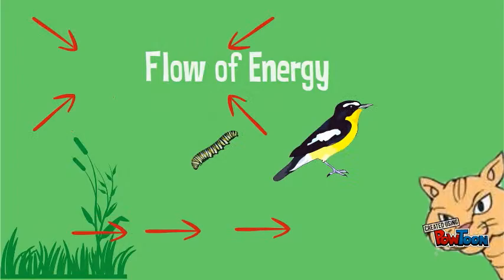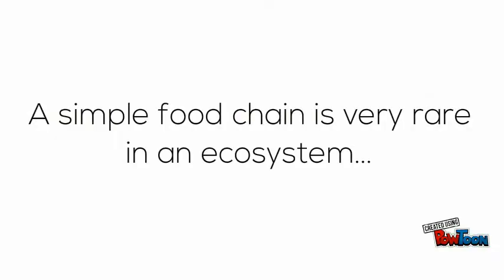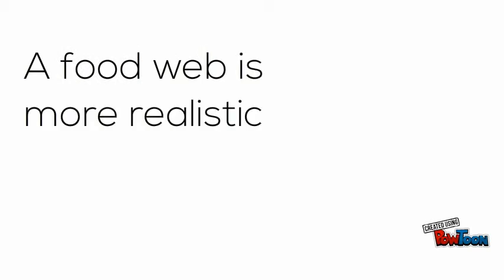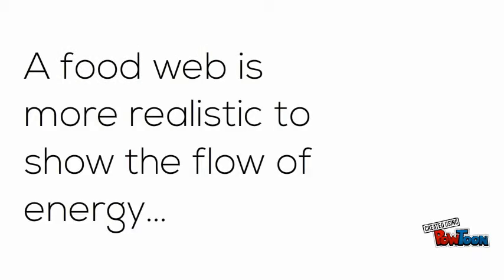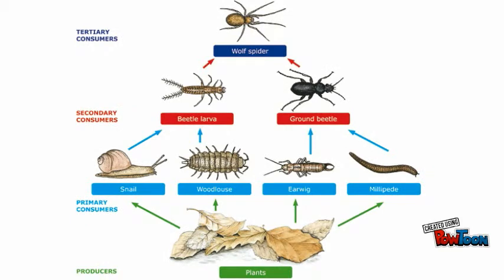However, food chains in a normal ecosystem are far more complex. Plants will have a number of primary consumers and these consumers will have a range of predators. A food web, which is simply a range of interconnecting food chains, better represents the flow of energy in a typical ecosystem.